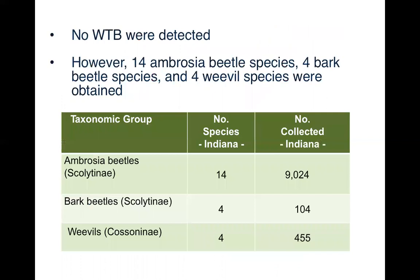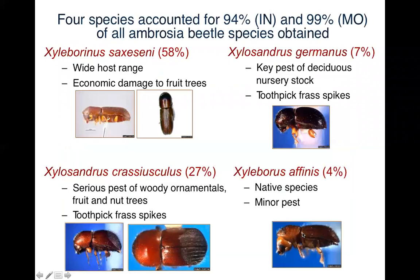From this 2011 study, there were no walnut twig beetles detected in the state. However, we collected 14 ambrosia beetle species, four bark beetle species, and four weevil species within Indiana. About 9,000 ambrosia beetles were collected in Indiana, and 455 cossonine weevils.